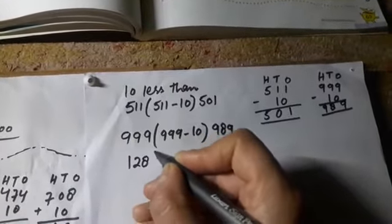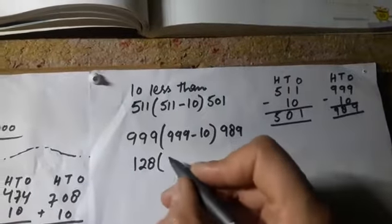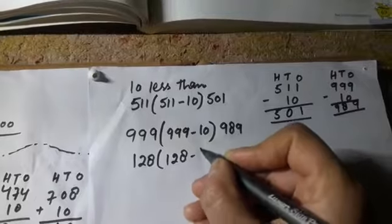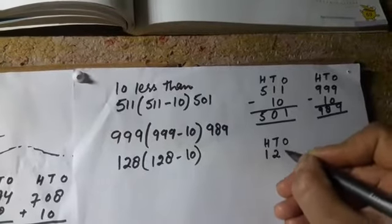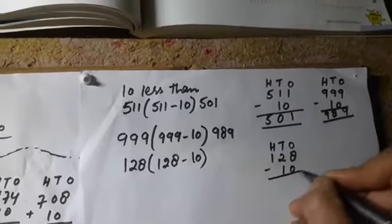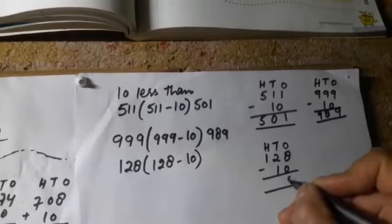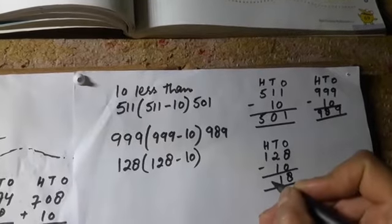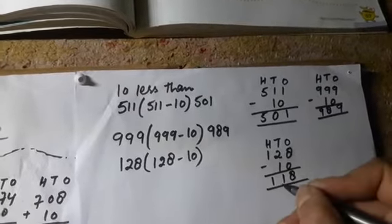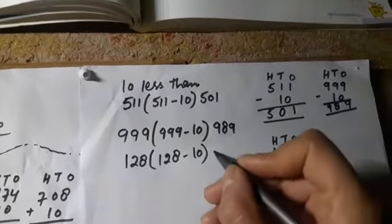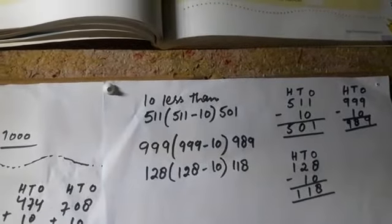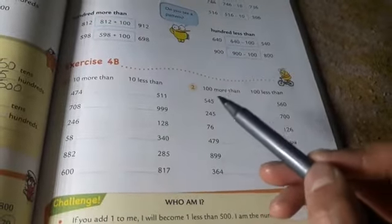एक और है — 128. इसको भी हमें 10 less करना है। 128 minus 10: 8 minus 0 = 8, 2 minus 1 = 1, और यह 1 नीचे आजाएगा सीधे ही। तो क्या बना — 118. It means 128 को जब हमने 10 less किया तो 118 बना।